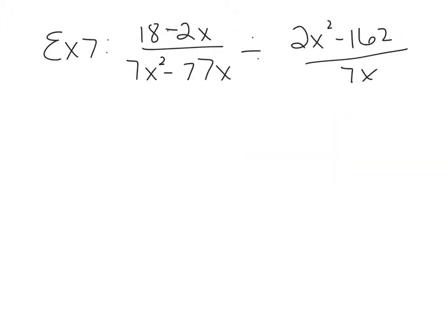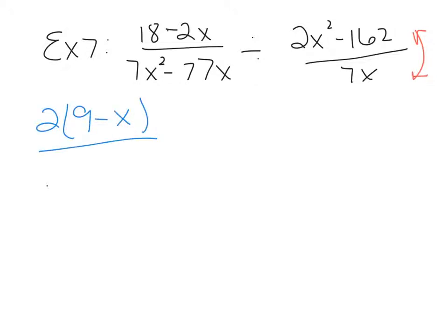Example 7 is at the top of page 148: 18 minus 2x over 7x squared minus 77x, divided by 2x squared minus 162 over 7x. Since it's division, we keep it, change to multiply, and flip it. In the numerator I see a GCF of 2, leaving 9 minus x. In the denominator the GCF is 7x, leaving x minus 11.